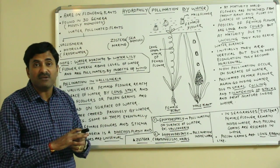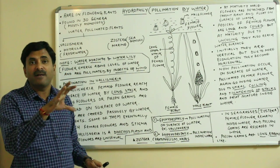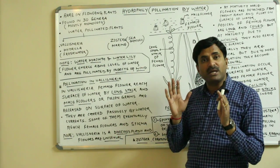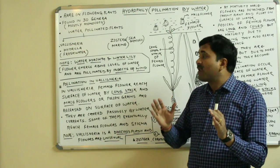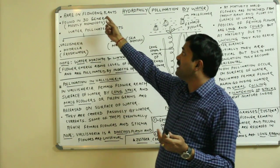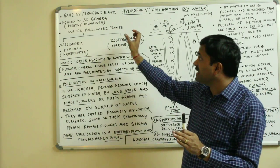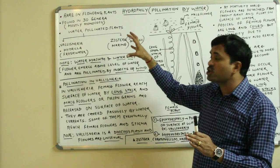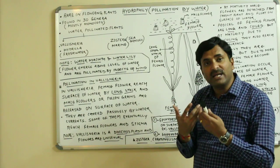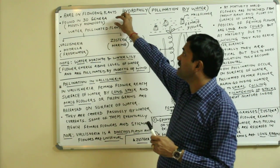In this video we will concentrate especially on Vallisneria, as many questions are asked about how pollination occurs there. We know that maximum pollination occurs by insects, but hydrophily is an abiotic agency. It is very rare in flowering plants, seen in only 30 genera, especially of the monocots, while others show anemophily or entomophily.